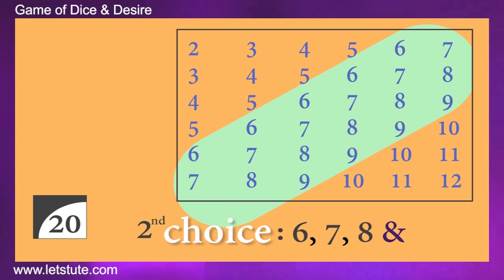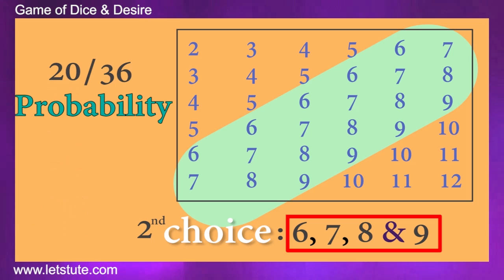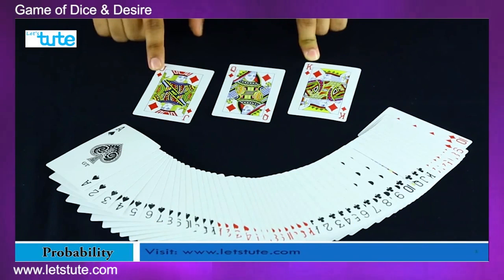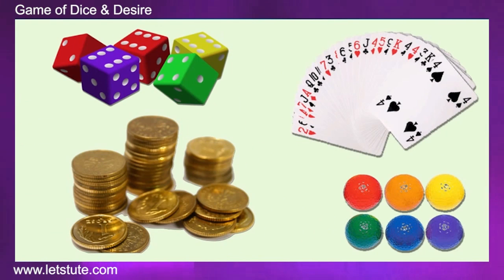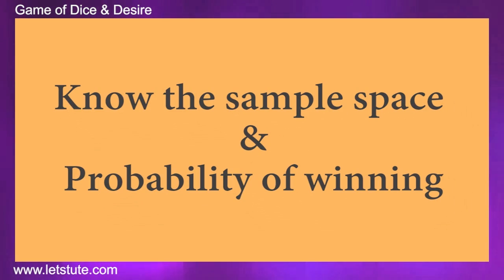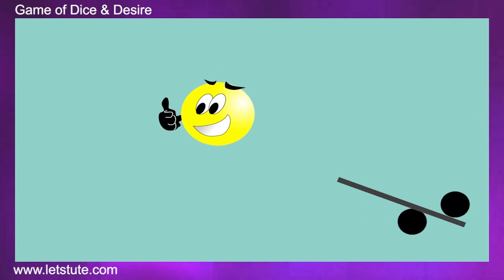Whereas in set 2, the numbers are very less, almost half than that of set 1, but the chances of their occurrence is very high. This is how many games are designed. So, before playing any such game, make sure you know the sample space and the probability of winning. And only then go ahead.